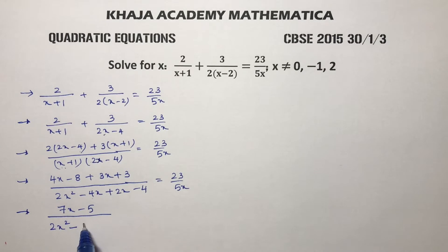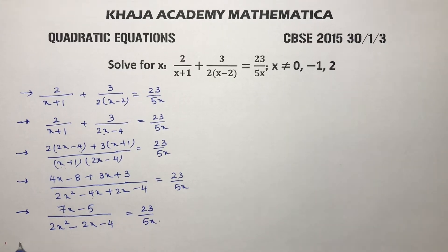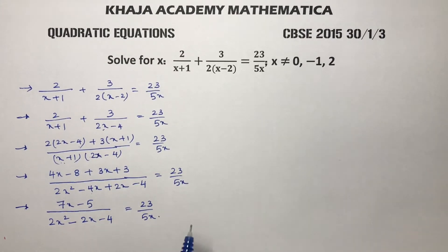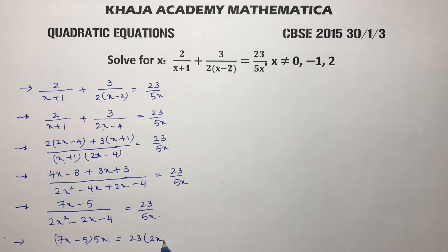So here, 4x plus 3x is 7x, minus 4x plus 2x is minus 2x, minus 4 equals 23/(5x). So if we cross-multiply: (7x minus 5) times 5x equals 23 times (2x squared minus 2x minus 4).